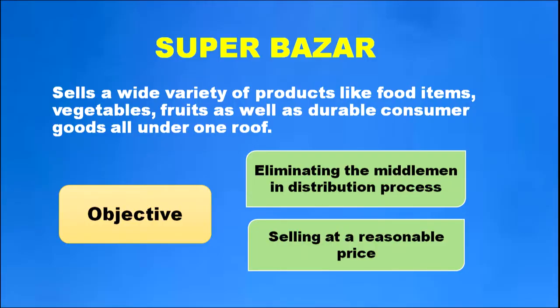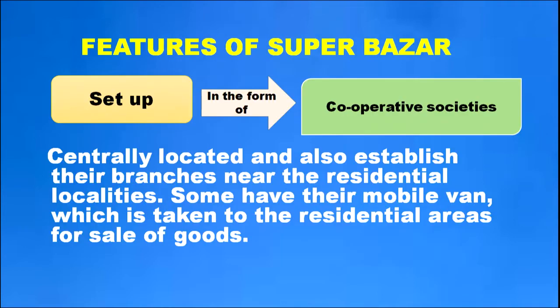Under large scale retail trade, we have studied departmental stores, and now we move to super bazaars. Super bazaars sell a wide variety of products like food items, vegetables, fruits, and durable consumer goods all under one roof. The main objective of a super bazaar is to eliminate middlemen in the distribution process. Super bazaars are usually set up as a form of cooperative society, are centrally located, and establish branches near residential localities. Some have mobile vans taken to residential areas for sale of goods.